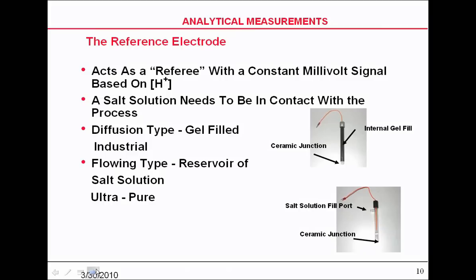The salt in it is needed to make contact with the process and also to make contact with the measuring electrode. In the industrial type, we use gel-filled. The reason for that is it's harder to contaminate it. It's slower to migrate. We don't need as much reference electrode in industrial probes as we do in ultra-pure for DI water manufacture or for ultra-pure in a power plant.